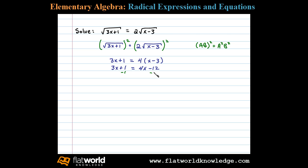First, subtract 1 on both sides. That leaves us with 3x equals 4x minus 13. Then, subtracting 4x on both sides, we're left with negative x equals negative 13, or x equals 13.